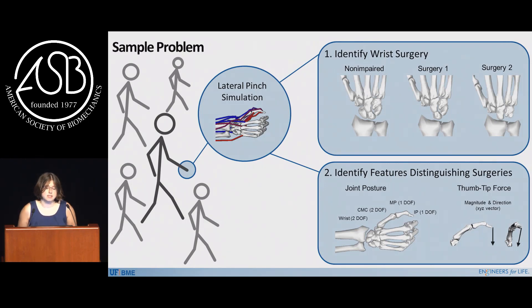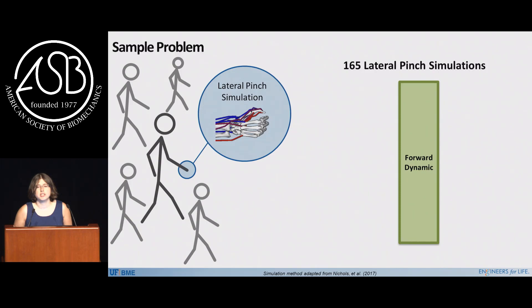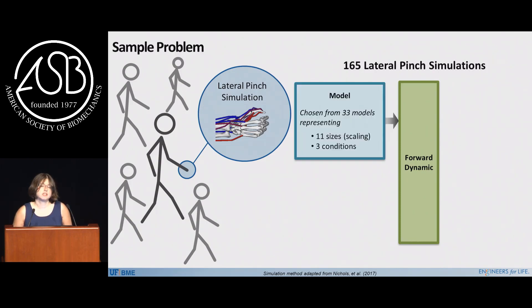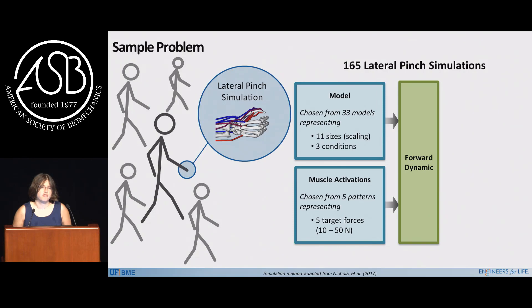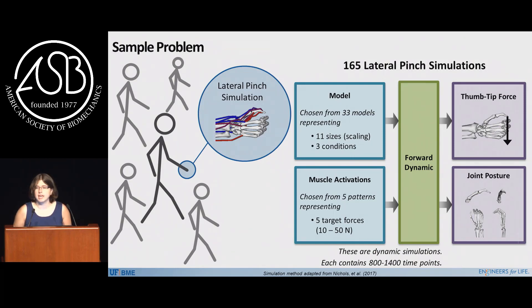Everything I'm showing you today is simulation data, because machine learning requires lots of data, and as a new faculty member I'm still working through all the paperwork to take data from human subjects. I used an OpenSim model and did 165 lateral pinch simulations using forward dynamics. This represents 33 models covering 11 different sizes as well as those three conditions — the two surgeries and the non-impaired state. I varied muscle activation to have different varieties of force generation ranging from about 10 to 50 newtons. I then calculated endpoint force and joint posture as our key output variables. These are dynamic simulations where every simulation contains 800 to 1,400 time points — one of the ways you can get lots of data.